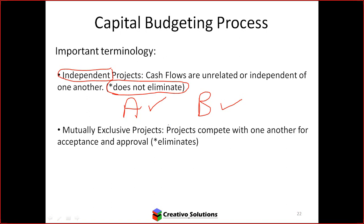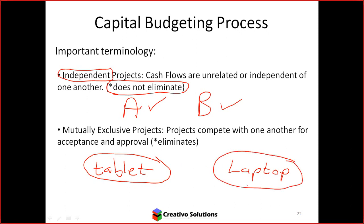Now we've got mutually exclusive projects — projects compete with one another for acceptance and approval. For example, tablet versus laptop. Those are two projects that would be mutually exclusive because you said your laptop was old and you needed to buy something new. You would decide either the tablet or the laptop — either or would be an option. The tablet can do everything a laptop can do and vice versa, so it's either or.